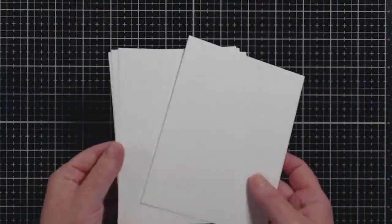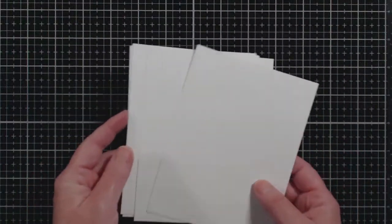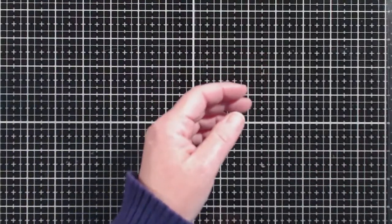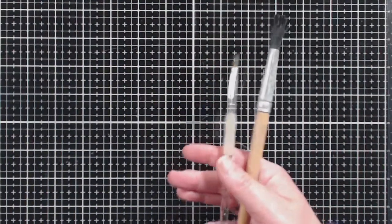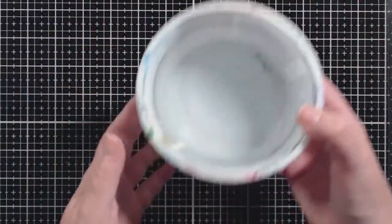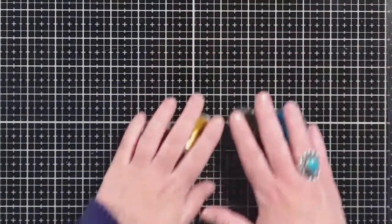This is Canson 140 watercolor paper cut down to A2 size. I'm also going to use some brushes. They're not necessarily watercolor brushes but they work just fine. I keep two tubs of water nearby when I'm using watercolors. One to clean my brush and one for the product itself.